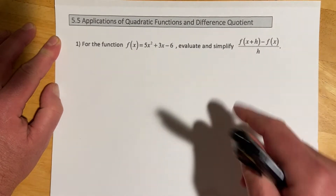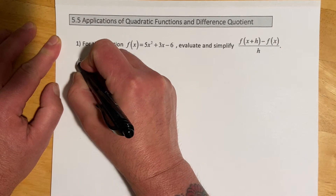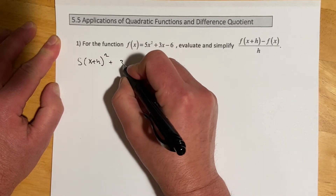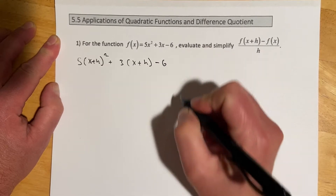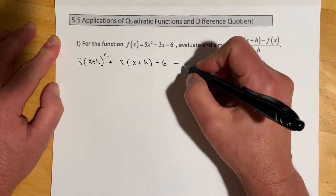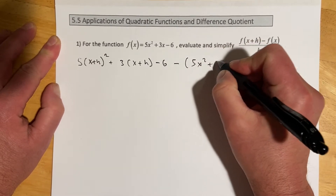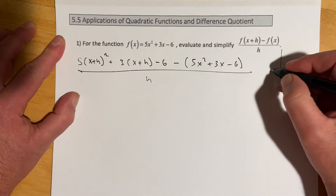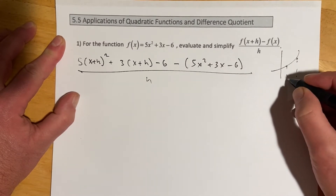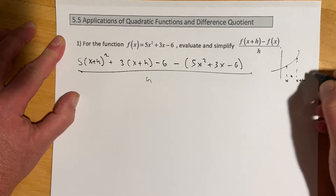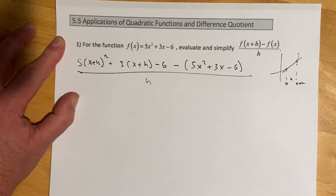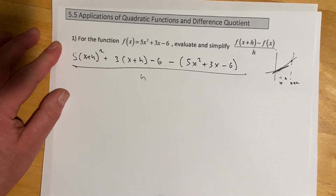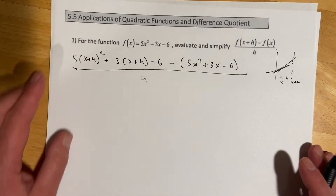This is telling us to evaluate the function at x plus h, so that would be 5 times (x+h) squared plus 3(x+h) minus 6, then we take away f(x) which is our original function: 5x squared plus 3x minus 6, all over h. Remember this difference quotient went with our average rate of change - we had x, some distance h, so this was x plus h, and we're finding that slope. When we get to calculus, we let h go to zero and instead of a secant line this becomes a tangent line - you'll see this a lot in Calc 151.